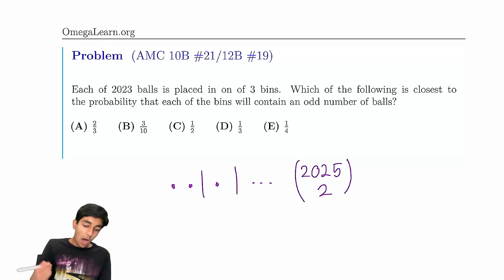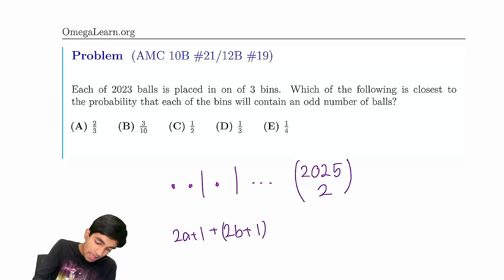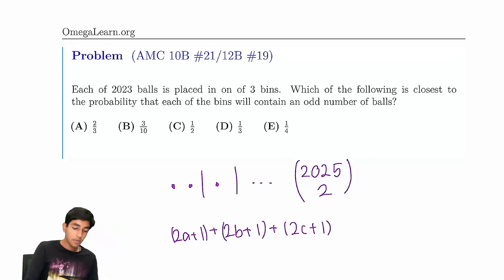But now, how many ways are there to do this if every bin contains an odd number of balls? Well, the key thing is, we can just say that the first bin has 2a+1 balls, the second bin has 2b+1 balls, and the third bin has 2c+1 balls.